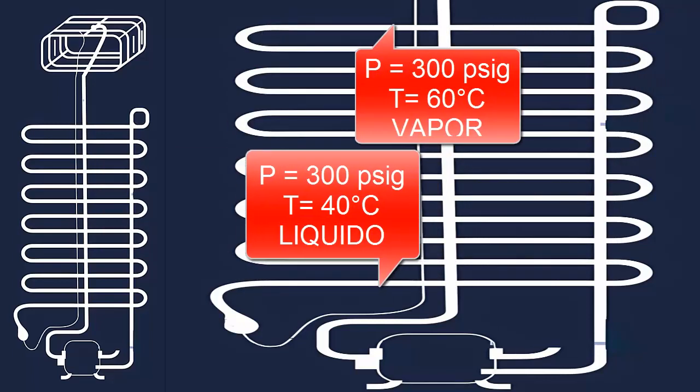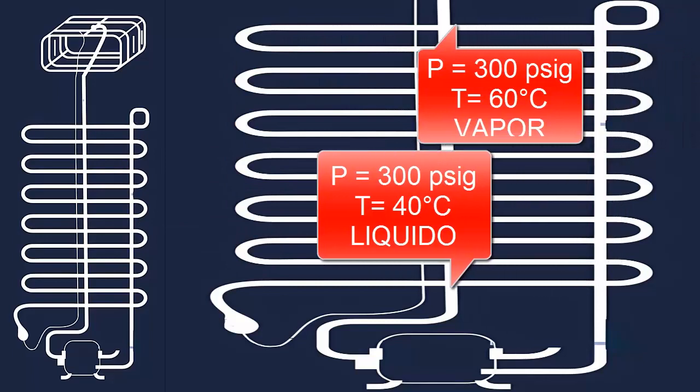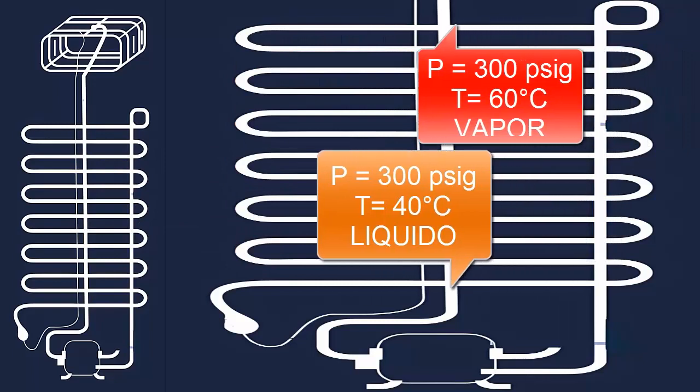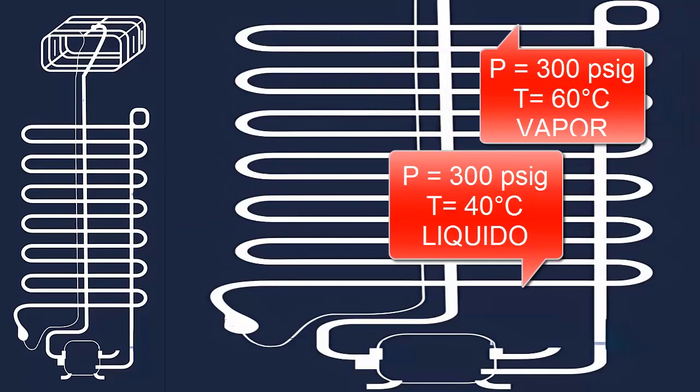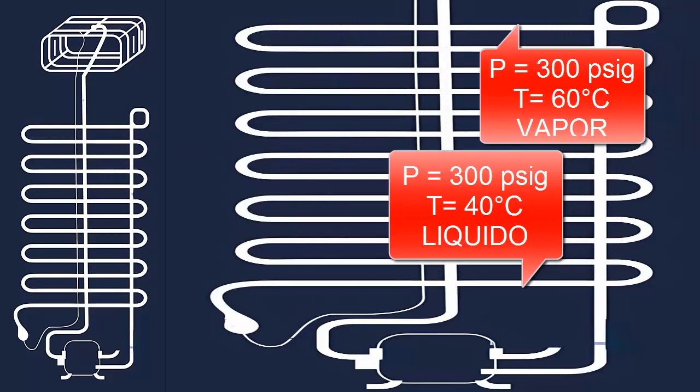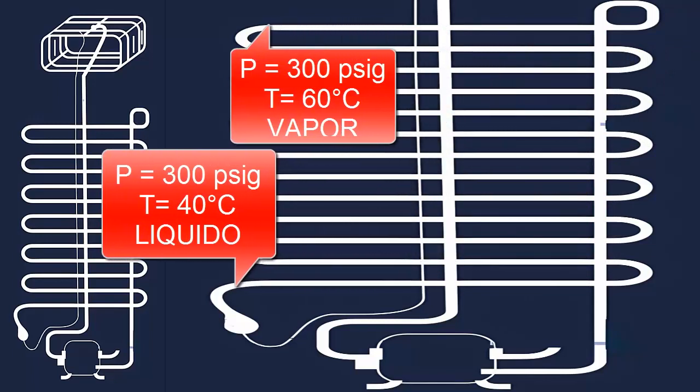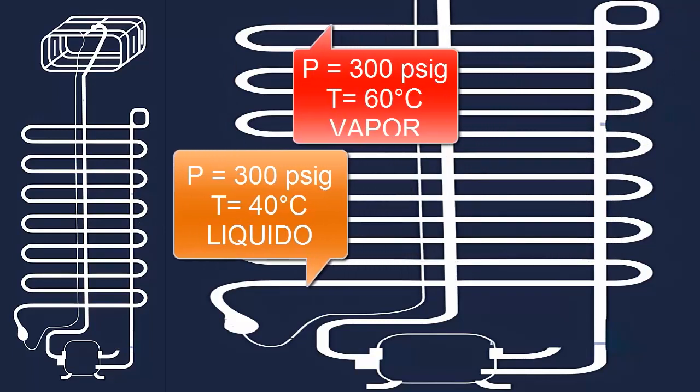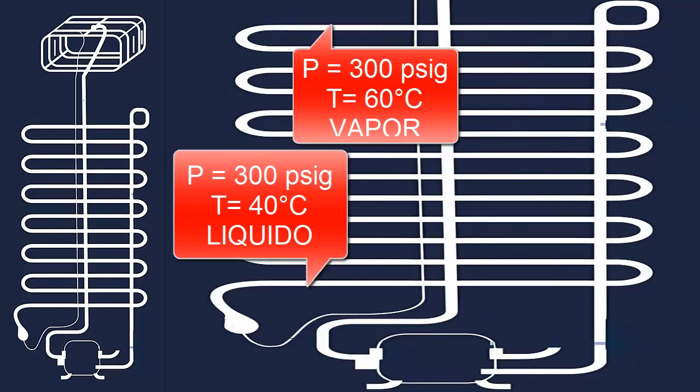As the R404A refrigerant loses heat in the condenser, it changes from a gaseous state to a liquid state. The pressure of the R404A refrigerant in the condenser remains at 300 pounds per square inch, but the R404A decreases its temperature considerably. This decrease in temperature of the R404A in the condenser allows the refrigerant to transition from a vapor state to a liquid state.